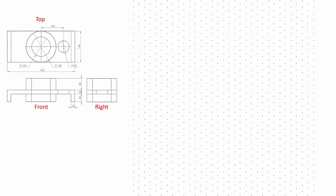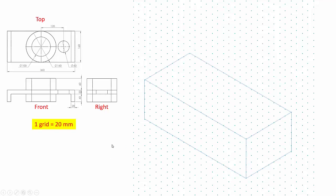I'm going to transform the dimensions onto my isometric grid paper and do a little bit of scaling. I'm going to use one grid size to be 20 millimeters. Therefore my longest dimension of 360 millimeters becomes 18 grid sizes, the height of 120 millimeters becomes 6 grids, and the width of 160 millimeters becomes 8 grids. With that I'm going to draw the bounding box on my isometric paper.